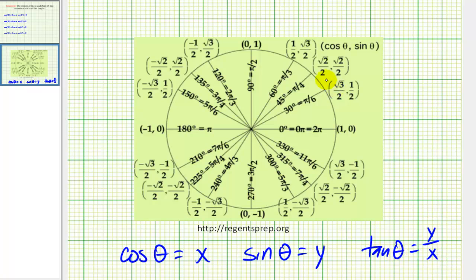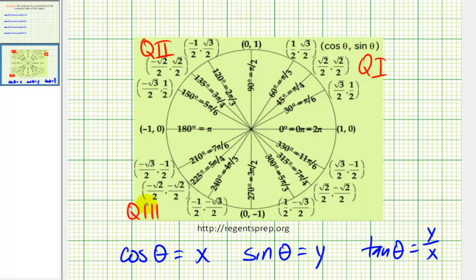Just to make sure we remember: when both the x and y-coordinates are positive, this is quadrant one. When x is negative and y is positive, we're in quadrant two. And if both x and y are negative, we're in quadrant three. And if x is positive and y is negative, we're in quadrant four.